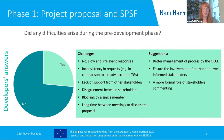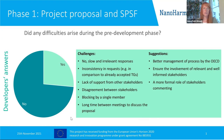Suggestions from developers for Phase 1 included: having a better management process at OECD, ensuring the involvement of relevant and informed stakeholders, and having a more formal role for stakeholder commenting. These were already good suggestions obtained during the survey.